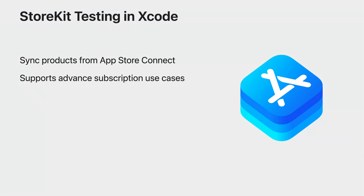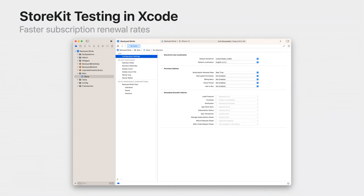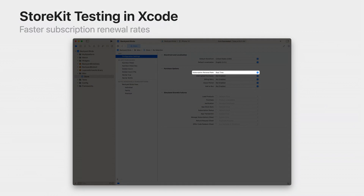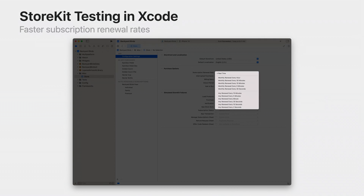You can build automation to continuously test your in-app purchases by using a dedicated StoreKit test framework. You have the ability to test advanced subscription use cases such as offer code redemptions, price increase sheet, and subscriptions entering and exiting billing retry — all locally, without any dependency on a server. And one unique capability is Flexible Subscription Renewal Rates, where you have the option to choose a rate that fits your needs, from real-time to every two seconds.